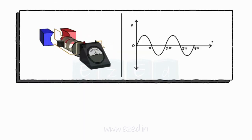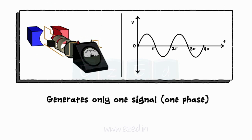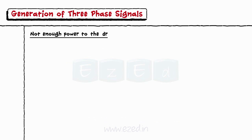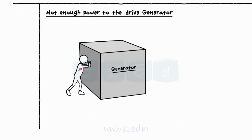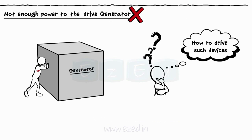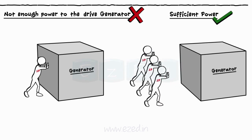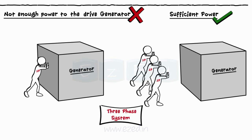We have already studied the AC generator. As it generates only one signal, it is called a single-phase generator. But the power generated by the single-phase generator is not sufficient to drive applications like an induction motor, generator, etc. Thus we need a system that will generate enough power to drive such high-power devices. This system is called the three-phase system and the generated signals are called three-phase signals.